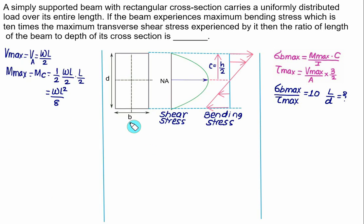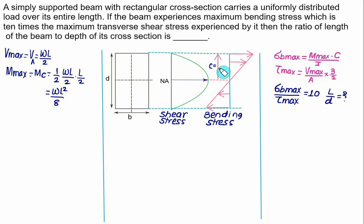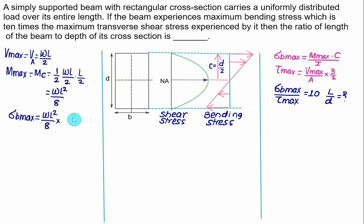For a rectangular section of width B and depth D, the maximum shear stress occurs at the neutral axis. It equals (WL/2) divided by area BD, multiplied by 3/2. The maximum bending stress occurs at the top or bottom fiber where C = D/2.